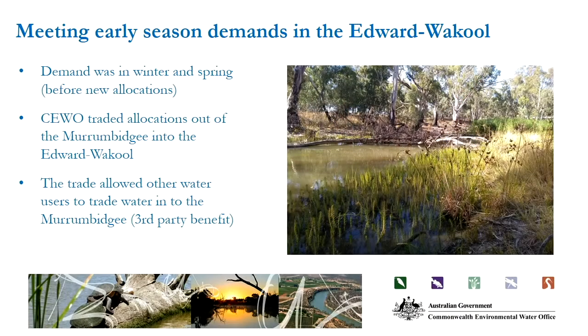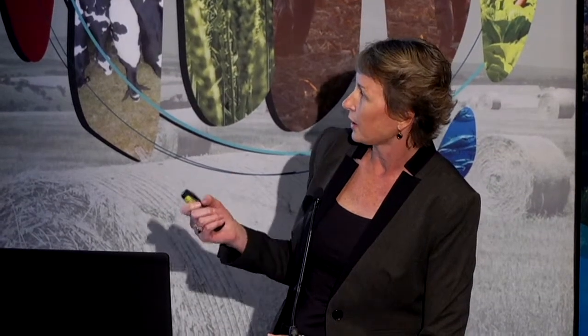Two quick examples of where we've used some of these tools to get environmental outcomes this season. In the Edward Wacool system we had a demand in winter and spring before new allocations. We traded some of our Murrumbidgee allocations into the Edward Wacool, and that actually allowed trade by others back up into the Murrumbidgee. In the end there was a third party benefit of us being able to move our water through the system.